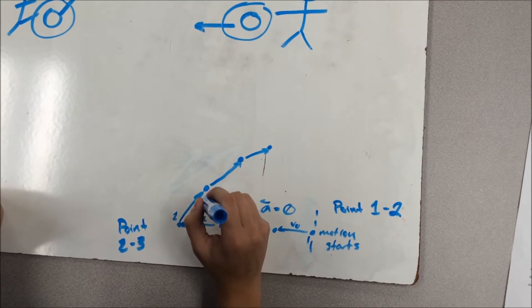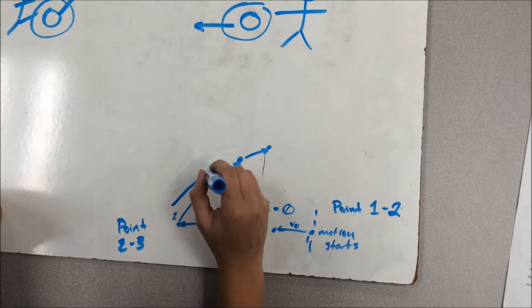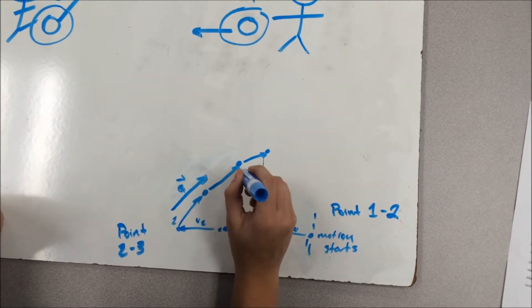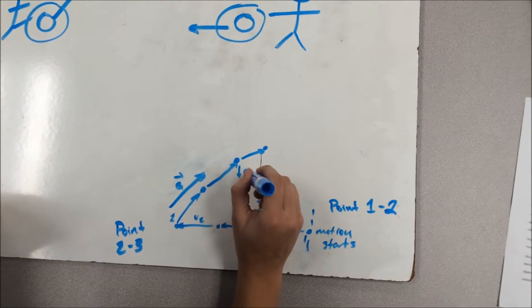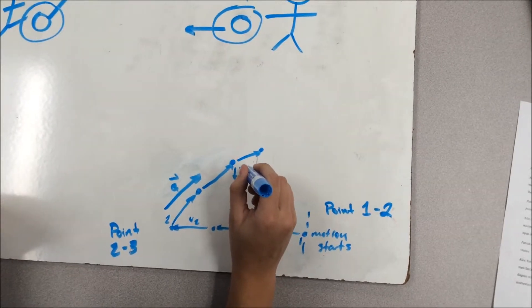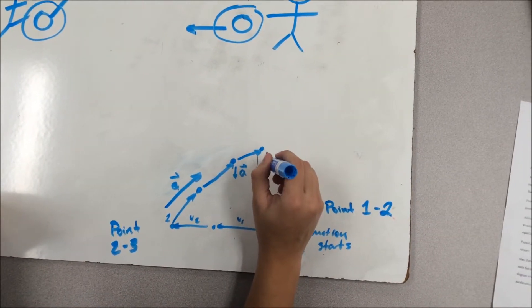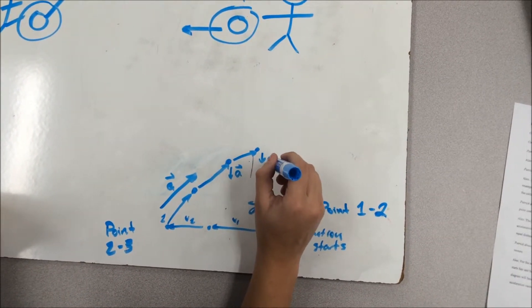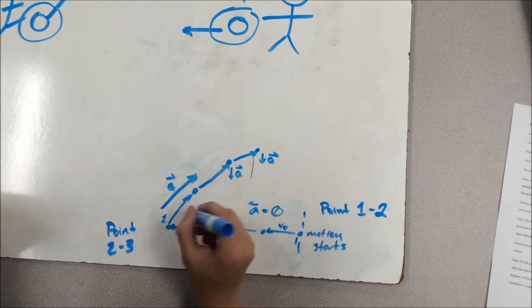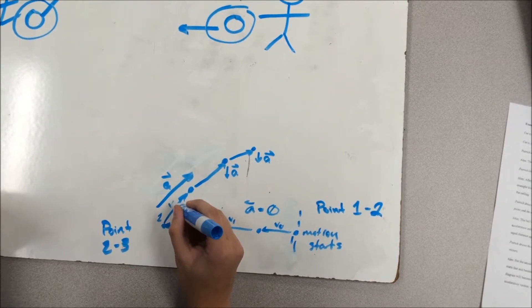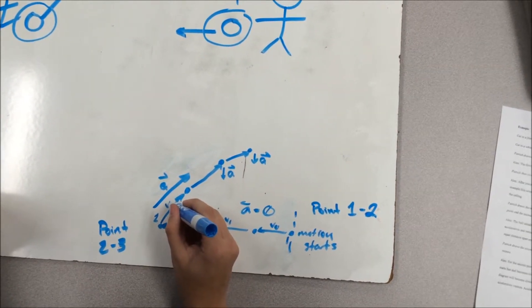After you draw the velocity vectors, we are going to need acceleration vectors. Acceleration vectors are found by subtracting the second velocity vector from the first. Put these vectors next to the velocity vectors, and then draw the final section of motion between the ceiling and the floor.